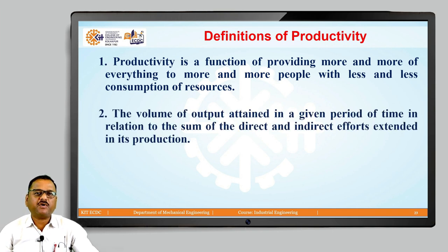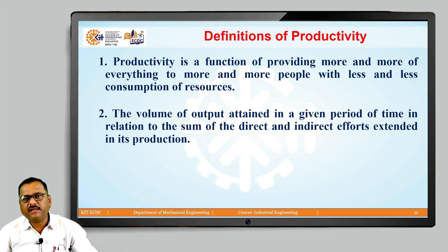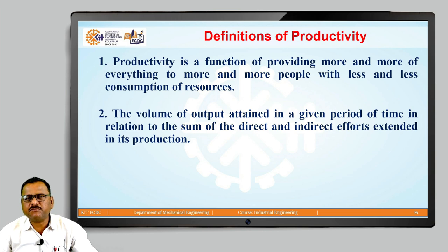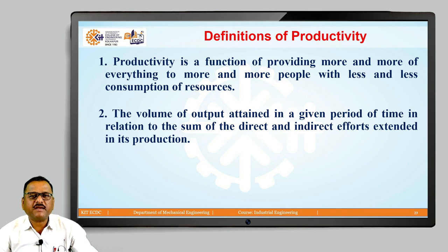The second definition of productivity is the volume of output attained in a given period of time in relation to the sum of direct and indirect efforts extended in its production. Simply, the volume generated as output within a specific period — say, a first shift, second shift, or a full day — relative to the direct and indirect efforts put in to achieve that output gives us the term productivity.